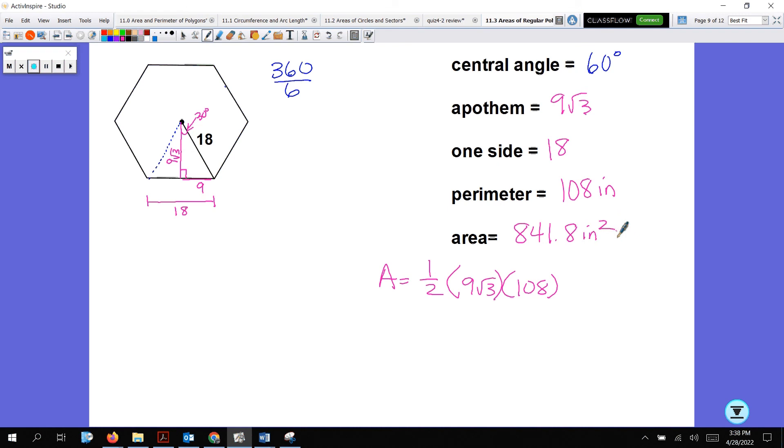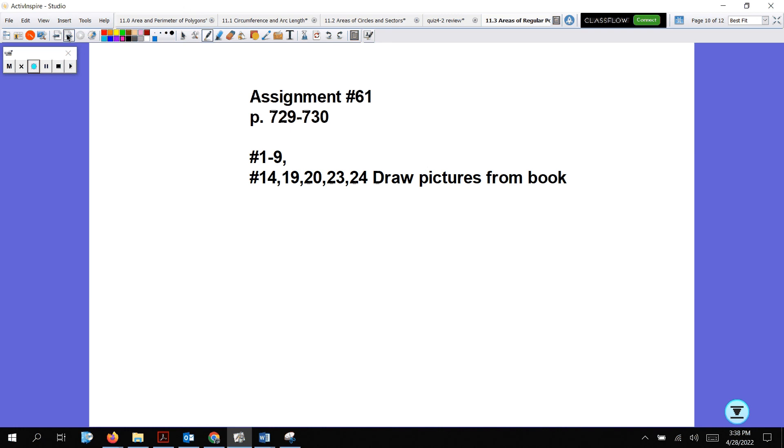Sorry if you have to watch that video again, but it is what it is. That's how we have to do it. So special right triangles or use SOHCAHTOA, whatever you got to do. There is a worksheet I gave you that goes along with the homework. Make sure you're finding all of these things. And here is your homework for tonight. Please draw pictures from the book, do not draw in the book. So 1 to 9 and number 14, 19, 20, 23, and 24. Let me know if you have any questions and have a great day. Bye.